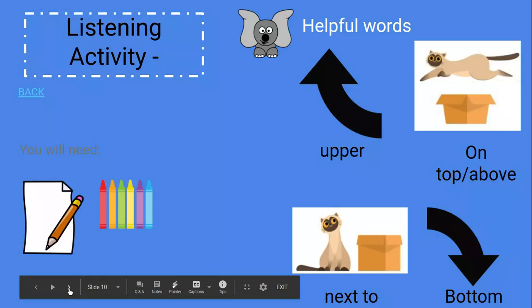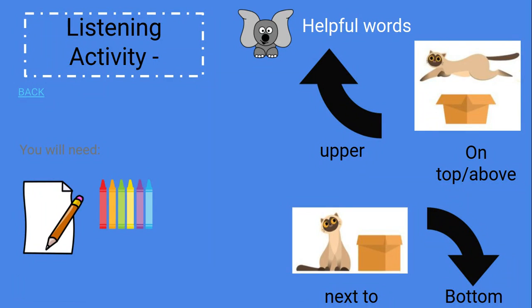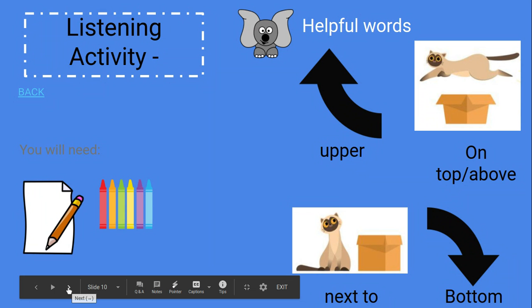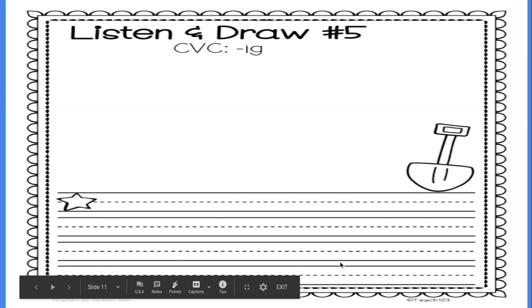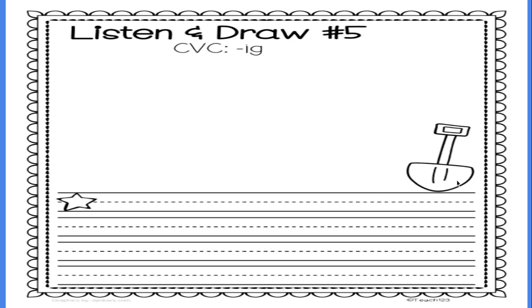So again, you want to fold your paper and do beginning, middle, and end. For our listening activity, you will need paper, a pencil, and some crayons. The story today has the shovel in the bottom right corner, so draw that first before you start.